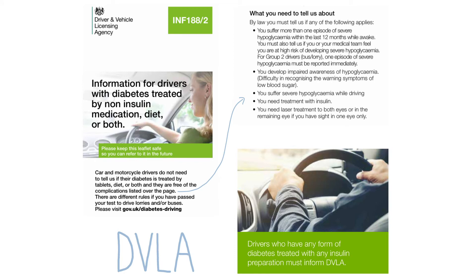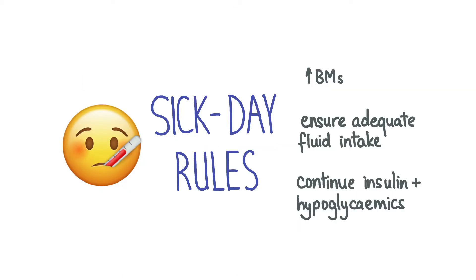Once a patient is diagnosed with diabetes they may be required to notify the DVLA depending on the severity of the disease, their treatment and the type of licence they hold. All patients with insulin-dependent diabetes mellitus must inform the DVLA. Patients with diabetes should be advised that if they become unwell they should increase the frequency of their blood glucose monitoring to about four-hourly and ensure adequate fluid intake, including sugary drinks if they're struggling to eat. They must continue to take their hypoglycaemic medications including insulin even if they're not eating, as the stress response due to being ill means cortisol levels are high and blood glucose levels will increase too.